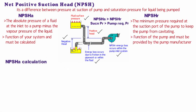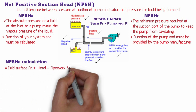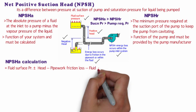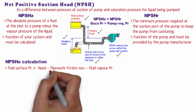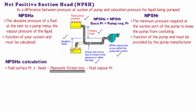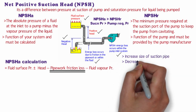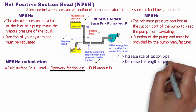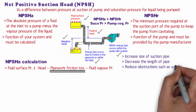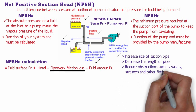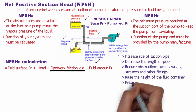NPSHa can be calculated using a formula that requires: pressure at the fluid surface, positive or negative head, friction losses due to piping, and fluid vapor pressure. There are several factors by which we can increase NPSHa: increase the size of the suction pipe to give a fluid velocity of about 1 meter per second (3 feet per second); decrease the length of the pipe; reduce obstructions such as valves, strainers, and other fittings; raise the height of the fluid container; and pressurize the fluid container, ensuring that pressure is maintained as the fluid level is lowered.